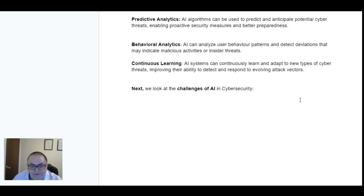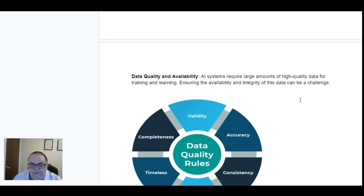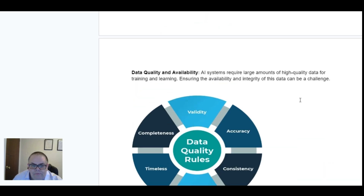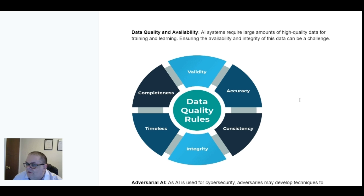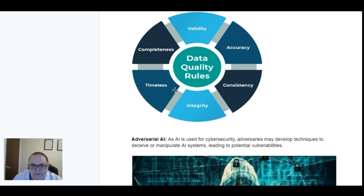Now down to the challenges of AI and cybersecurity. One of the problems is the quality of data — the availability and quality of data. AI systems require large amounts of high quality data for training and learning, and ensuring the availability and integrity of this data can be a challenge. Key data quality dimensions include integrity, consistency, accuracy, validity, completeness and timeliness.